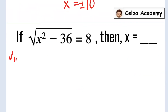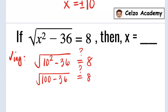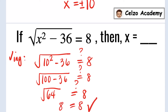Let's check our answers. First, let's plug in x equals 10. We have the square root of 10 squared minus 36 is equal to 8. Simplifying inside the square root, 10 squared is 100, so we have 100 minus 36 is equal to 8. Simplifying the radicand, 100 minus 36 is 64, so we have the square root of 64. And the square root of 64 is 8. So yes, 10 will work.